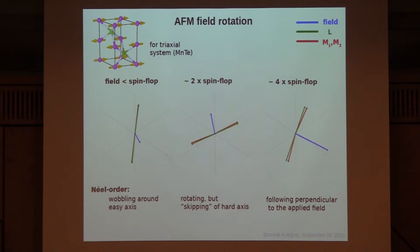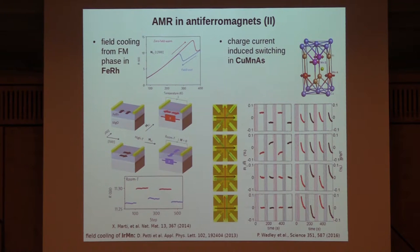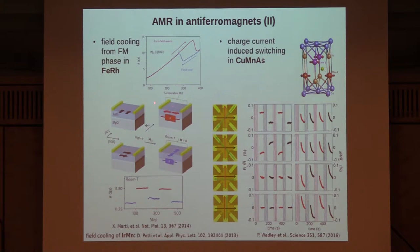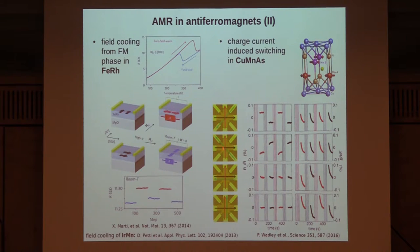Detecting AMR this way is tricky because the spin-flop field is rather high, so people found other ways, such as field cooling. In iron rhodium — a special case where heating brings the system to a ferromagnetic phase — you apply a magnetic field and cool down to room temperature where it becomes antiferromagnetic. This field cooling sets the orientation of antiferromagnetic domains and yields two different resistance states attributed to AMR. Similarly, in iridium manganese and copper manganese arsenide, charge current-induced switching due to special crystal symmetry leads to a staggered field which moves the antiferromagnetic order, and different resistance states are attributed to AMR by symmetry considerations.